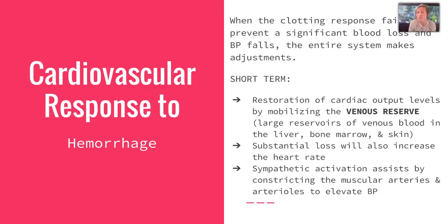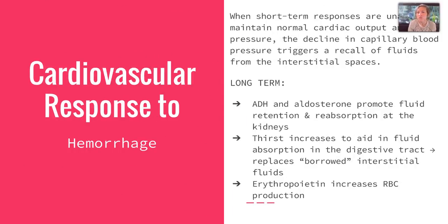The short-term response to hemorrhage is restoration of cardiac output by mobilizing a venous reserve — large reservoirs of venous blood in the liver, bone marrow, and skin. Substantial loss also increases heart rate, and sympathetic activation assists by constricting muscular arteries and arterioles to elevate blood pressure. Long-term response uses ADH and aldosterone to promote fluid retention and reabsorption at the kidneys. Thirst increases to aid fluid absorption in the digestive tract to replace borrowed interstitial fluids, and erythropoietin increases red blood cell production.